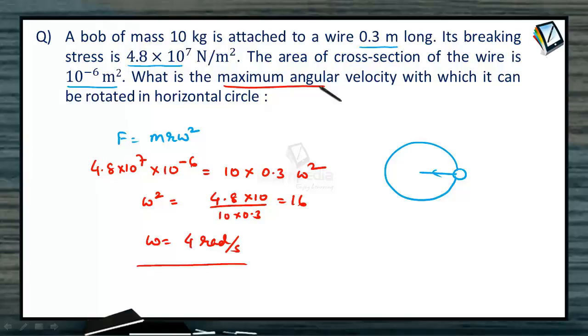So what is the maximum angular velocity with which it can be rotated in a horizontal circle? It can be rotated with 4 radian per second so that the string does not break.